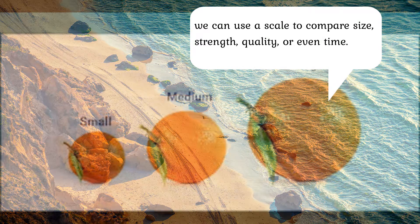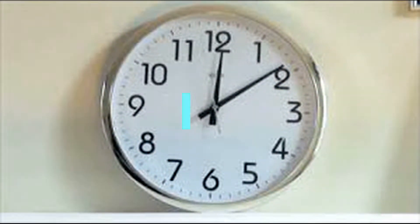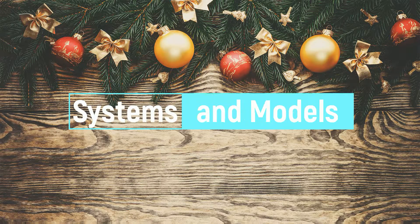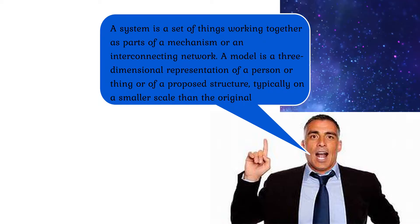We can use a scale to compare size. A system is a set of things working together as parts of a mechanism or an interconnecting network. A model is a three-dimensional representation of a person or thing or of a proposed structure, typically on a smaller scale than the original.